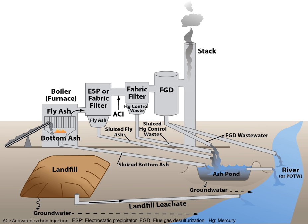These include dry ash handling, closed-loop ash recycling, chemical precipitation, biological treatment such as an activated sludge process, membrane systems, and evaporation crystallization systems. Technological advancements in ion exchange membranes and electrodialysis systems has enabled high-efficiency treatment of flue gas desulphurization wastewater to meet recent EPA discharge limits. The treatment approach is similar for other highly scaling industrial wastewaters.